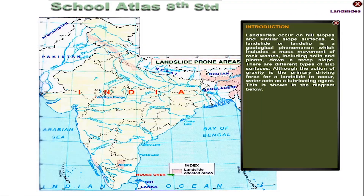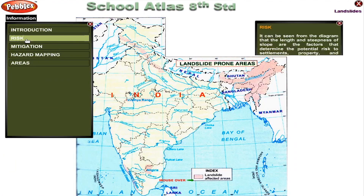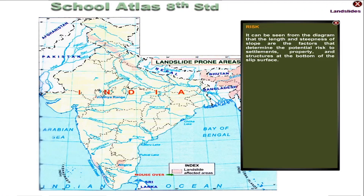Although the action of gravity is the primary driving force for a landslide to occur, water acts as a lubricating agent, as shown in the diagram below. It can be seen from the diagram that the length and the steepness of slope are the factors that determine the potential risk to settlements, property and structures at the bottom of the slip surface.